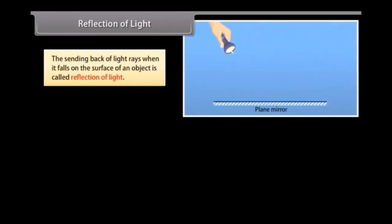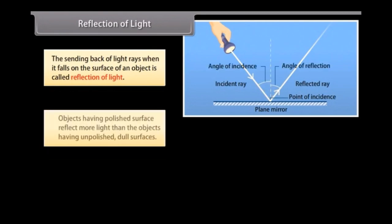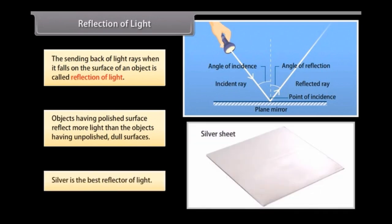Reflection of light. The sending back of light rays when it falls on the surface of an object is called reflection of light. Objects having polished surfaces reflect more light than objects having unpolished dull surfaces. Silver is the best reflector of light.